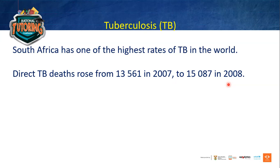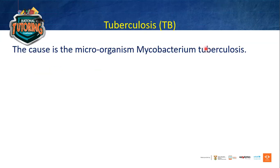Why, when TB is curable and there's medication available, did so many people die from it? The cause is a microorganism — mycobacterium tuberculosis — so small you can't see it with the naked eye. If someone with TB in the room was coughing or sneezing, you could catch TB that way, similar to how COVID-19 spreads when someone coughs or sneezes in your presence.